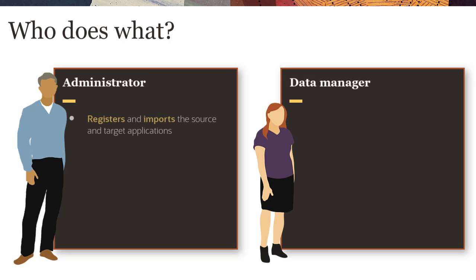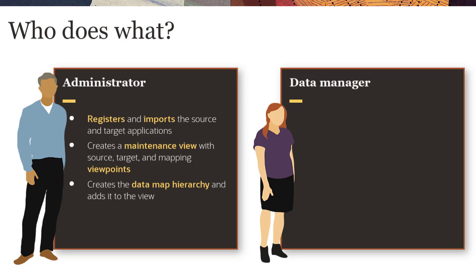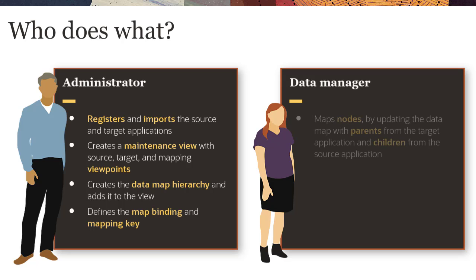An administrator registers and imports the source and target applications, creates a maintenance view containing the source, target, and mapping viewpoints, creates the data map hierarchy and adds it to the view, and defines the map binding and mapping key. A Data Manager user maps source nodes to target nodes by updating the data map with parents from the target application and children from the source application, and then exports the mapping data.